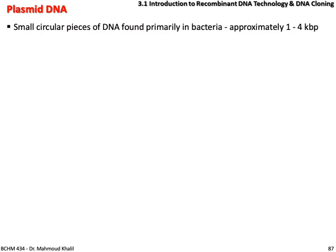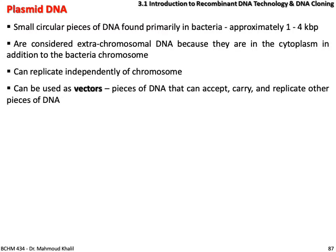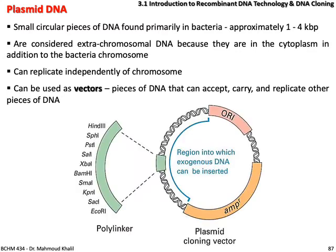What is plasmid DNA? Small circular pieces of DNA found primarily in bacteria, around 1 to 4 kilobase pairs, considered extra-chromosomal DNA because they are in the cytoplasm in addition to the bacterial chromosomes. They can replicate independently of the chromosome and can be used as vectors to carry and replicate other pieces of DNA. Any plasmid vector consists of three regions: the ORI (origin of replication), the multiple cloning site (MCS) or polylinker — a DNA sequence containing all restriction sites — and the region where you insert the gene of interest.